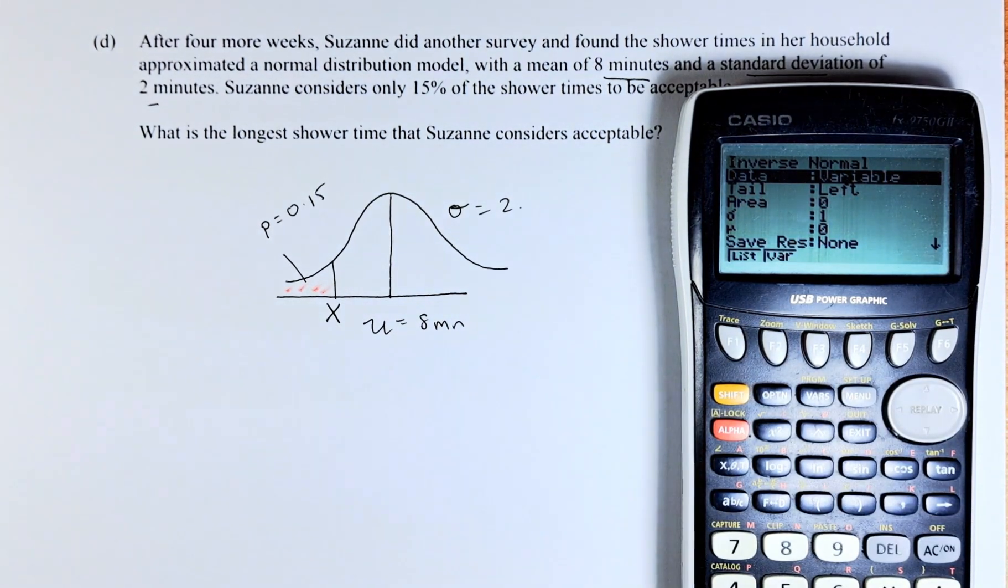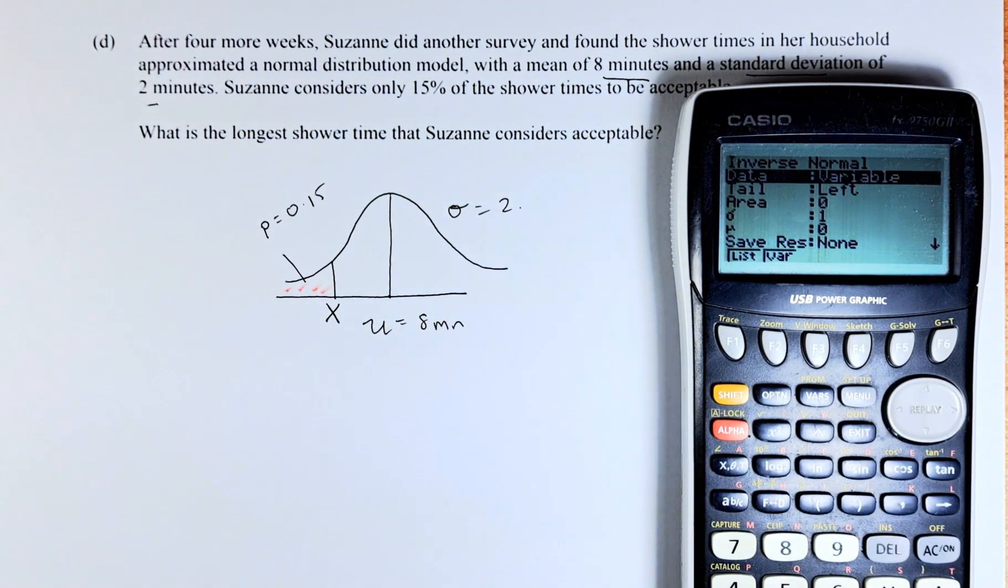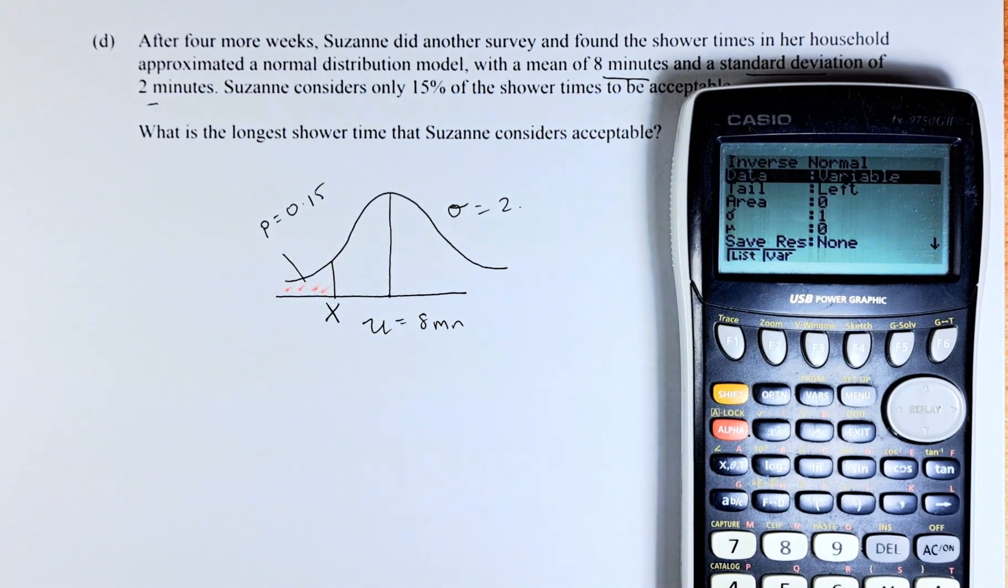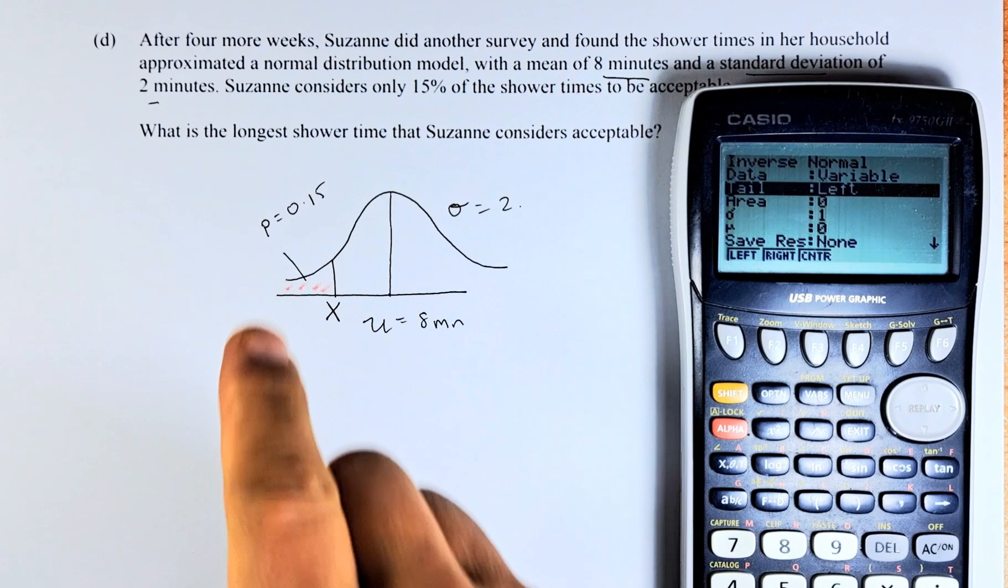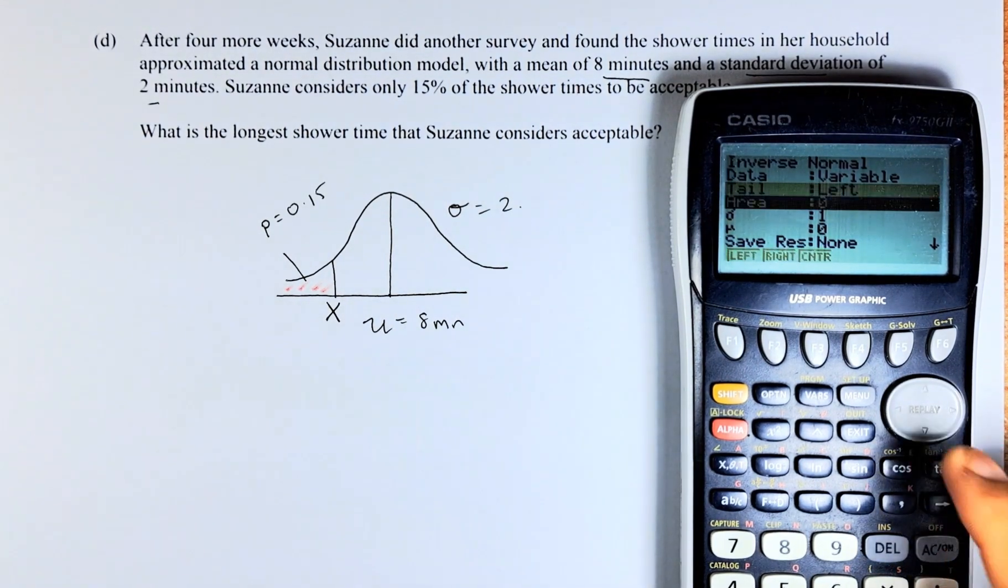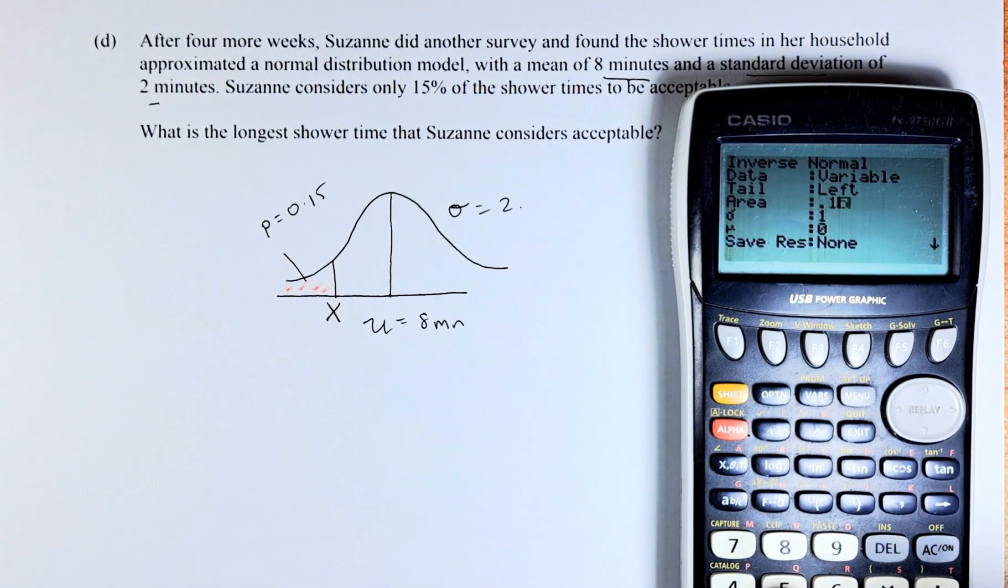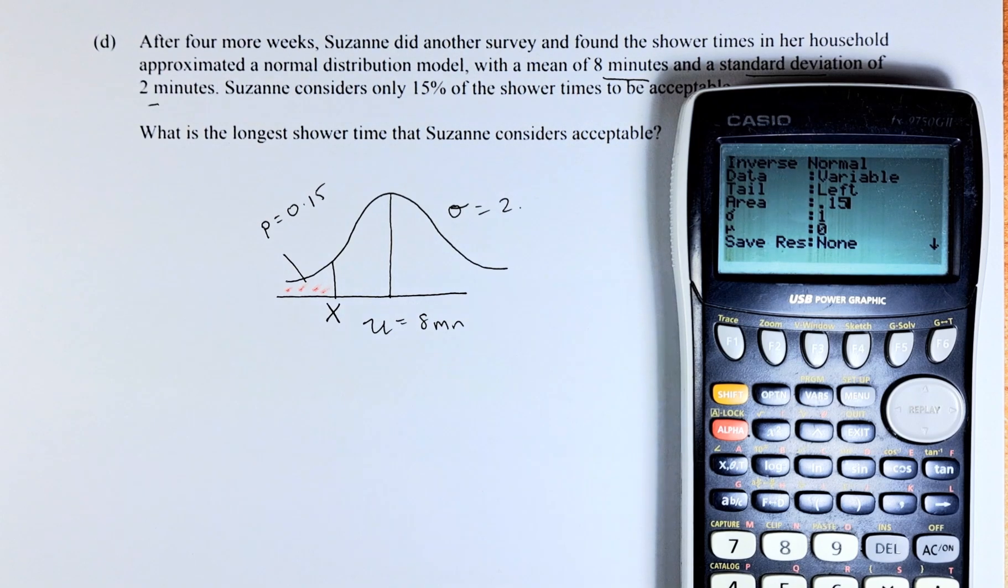We are going to start. The tail of the area here is on the left, so we are going to leave it as left. Area is 0.15, so we are going to put in 0.15 there and press the execute button.